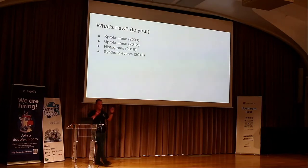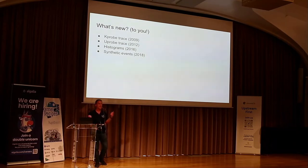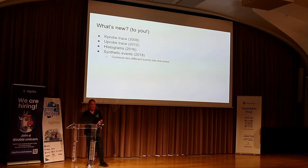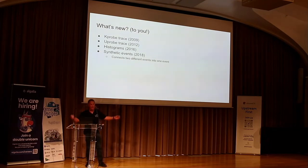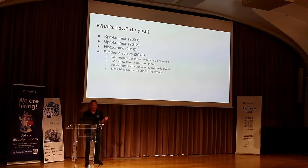Let's take you to synthetic events, which came in 2018. Still not new to me, but new to you. I knew people weren't using them because after a couple years I tried playing with them and found a ton of bugs — if anyone was actually using them, they would have complained. I fixed them because I wanted to use them. What synthetic events do — this was pushed by the real-time world — is take two different events and put them together as a single event. You could show the latency between them, and pass some information back and forth. It uses histograms to create them and can pass variables.